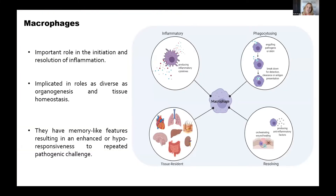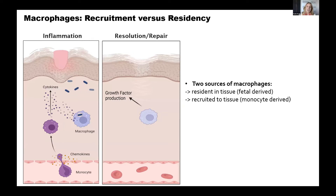I want to start by talking about macrophages and emphasizing how important these cells are to study — particularly because they play such an important role in initiation and resolution of inflammation, but they also play a diverse range of roles in the body from organogenesis to tissue homeostasis. One of the fantastic qualities about these cells is that they have this capacity to remember a pathogen they've previously encountered — coming under the umbrella of immunological memory — and you can model this by looking at their enhanced or hyper-responsiveness to a pathogen they encounter once again. Prior to birth, macrophages are actually seeded in your tissues from a non-monocytic progenitor, whereas during adulthood monocytes in circulation can also give rise to macrophages, particularly during an inflammatory scenario.